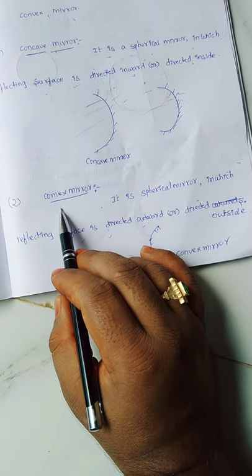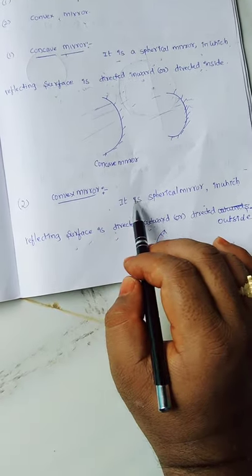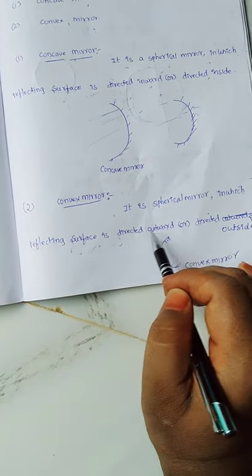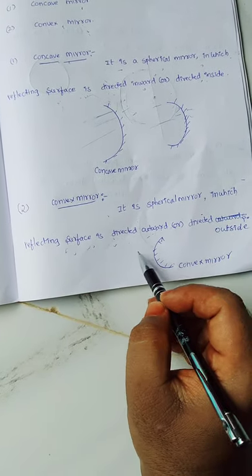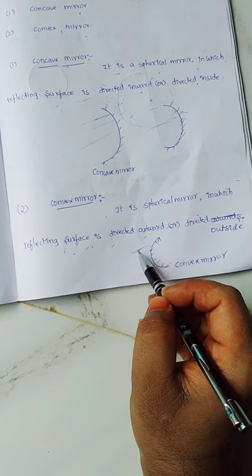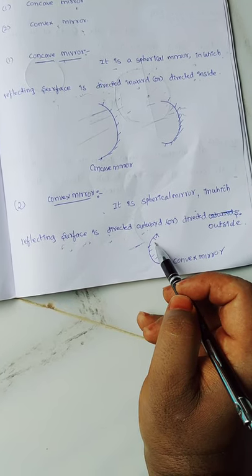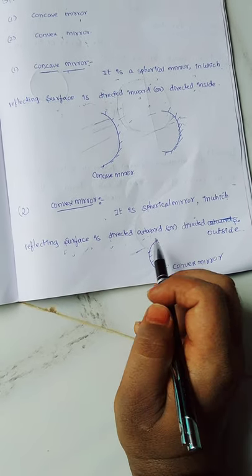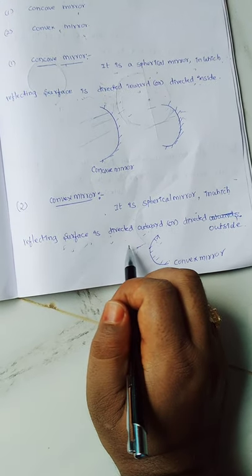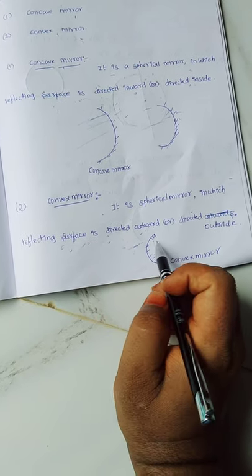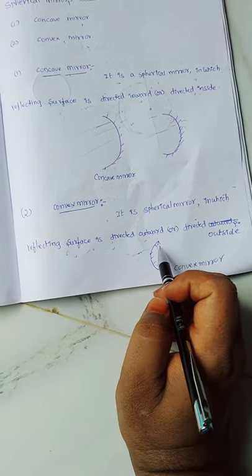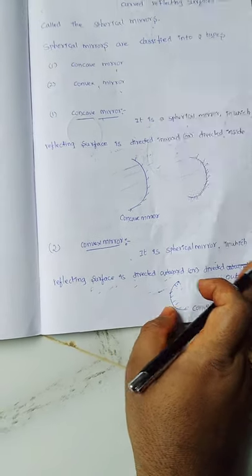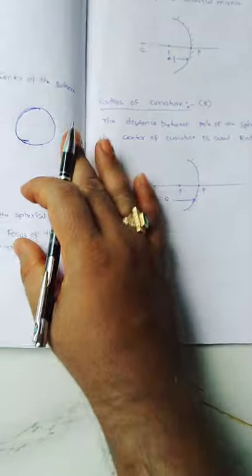Convex mirror is one of the spherical mirrors in which the reflecting surface is directed outward or directed outside. The outward surface is the reflecting surface, and the dotted line represents the silver-coated surface. On the outside surface, light rays will be reflected; on the silver-coated side, light rays do not reflect because it is a coated surface.